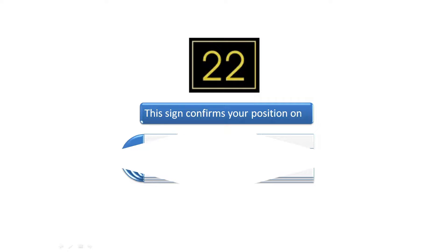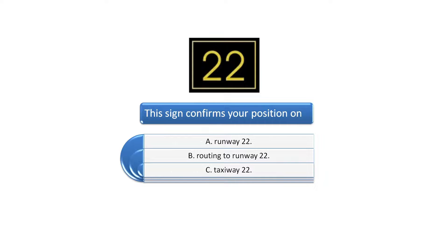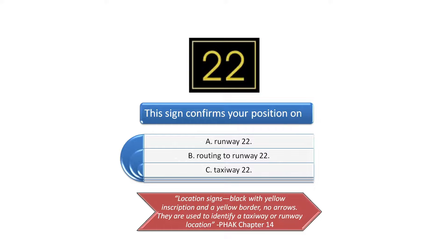This sign confirms your position on. Recall from our previous video on how to read airport signs and markings that location signs have yellow letters or numbers on a black background. This sign would confirm the pilot's position on runway 22 since location signs are black with yellow inscription and a yellow border with no arrows.